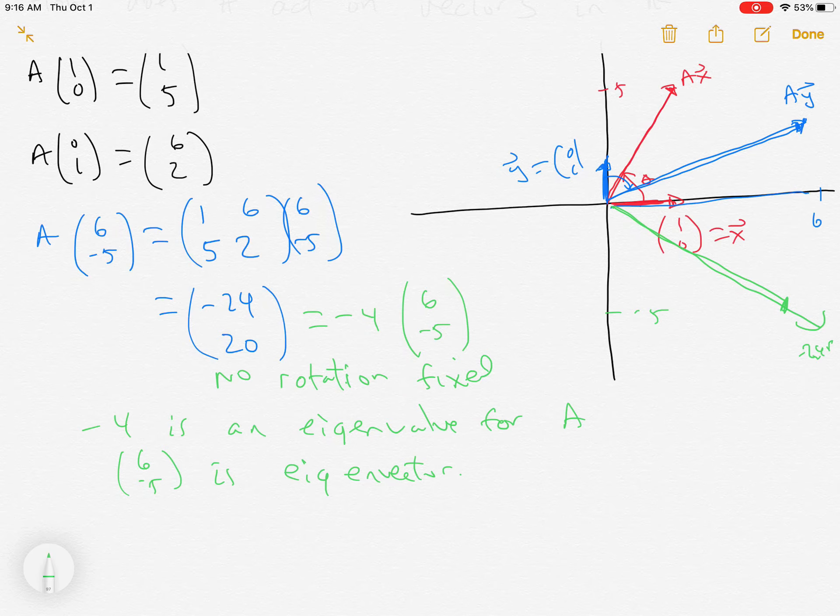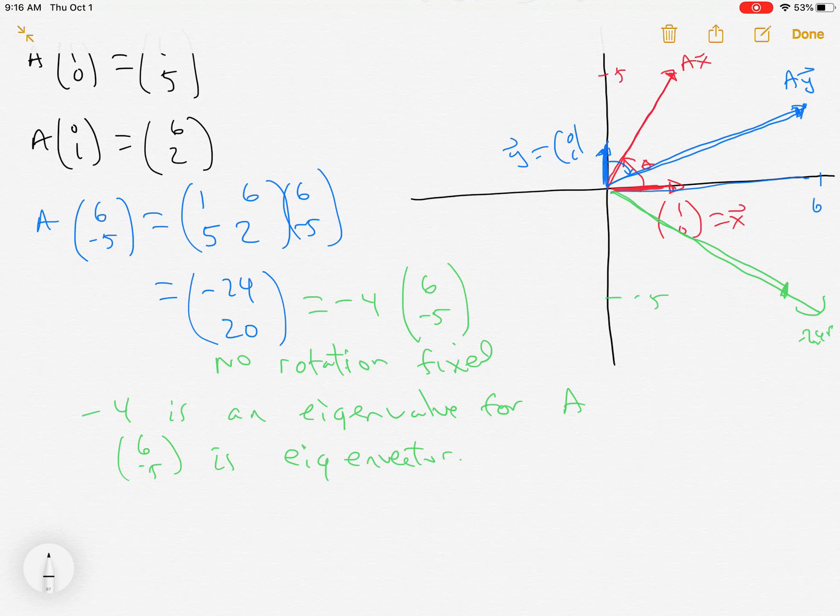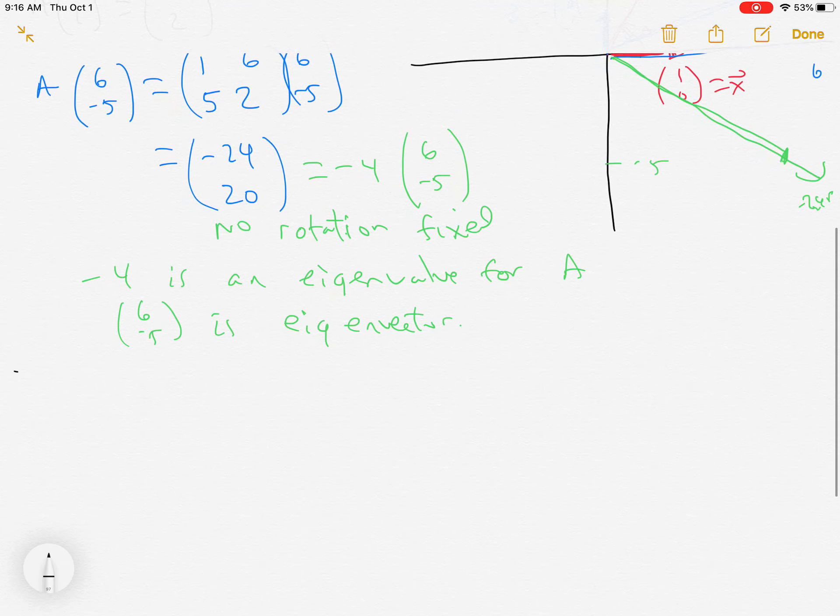In this case, -4 is an eigenvalue for A, and (6, -5) is the corresponding eigenvector. That's not a really good definition, but hopefully this picture gave some motivation to what's going on. So in this game, A acts on any vector in R² by either stretching it or rotating it, except for two.